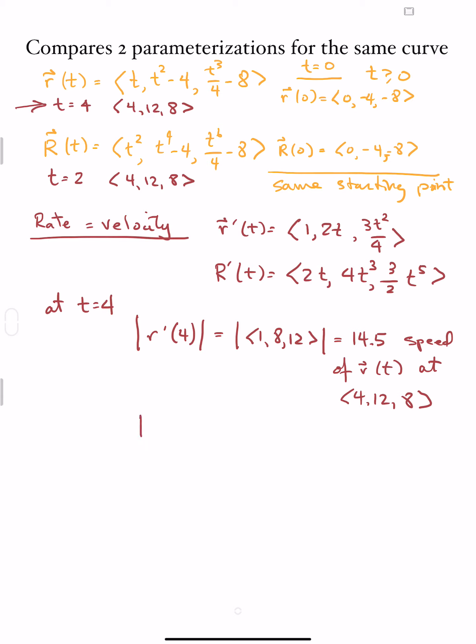If I look at the capital vector and see how fast it's going at the same point in space, I'd have to go at t = 2, and that value is going to be the magnitude of the vector ⟨4, 32, 48⟩, just putting the value 2 into my vector expression, and that's 57.8 speed of this capital R at that same point, at (4, 12, 8).